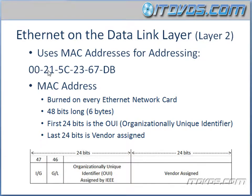The MAC address is still the same. The bottom line is every MAC address has 48 bits total, which is 6 bytes — because there are 8 bits in a byte, so 6 times 8 is 48 — and each one of these sections is a byte. So 00 is a byte, 21 is a byte, 5c is a byte, and so on. There are 6 total.